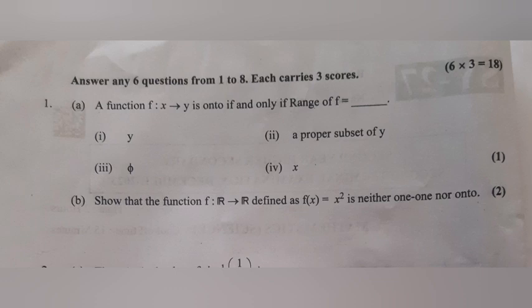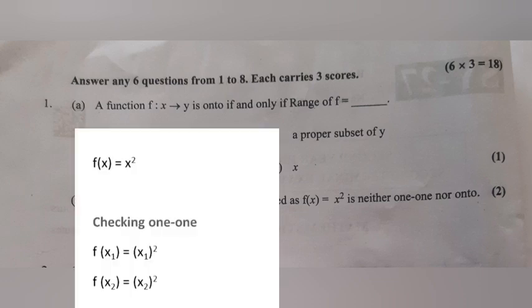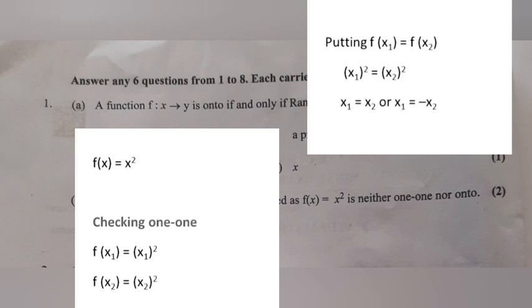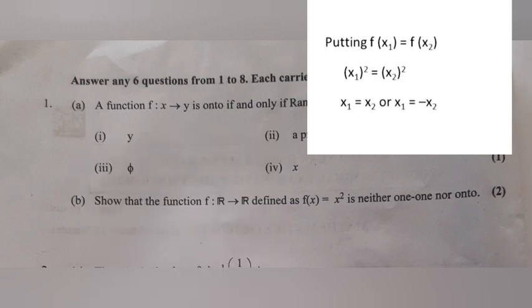Show that the function f from R to R defined as f(x) = x² is neither one-one nor onto. Checking one-one: f(x1) = x1², f(x2) = x2². Setting f(x1) = f(x2) gives x1² = x2², so x1 = x2 or x1 = −x2.